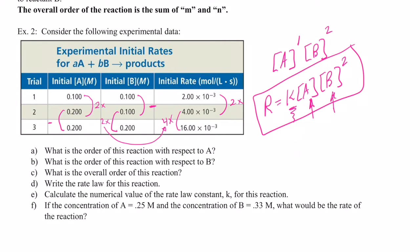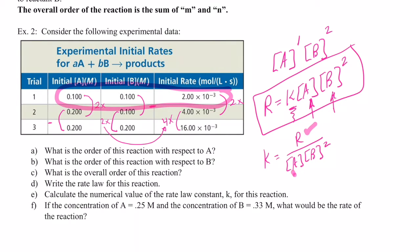We solved for the rate constant: K equals R over A times B squared. We plugged in data from the first experiment to find the numerical value of K. With that known, we can plug in any concentration for A or B and solve for the rate without doing another experiment. In the next video we're going to practice a bunch of these — I just wanted to set that up for you today. See you soon.